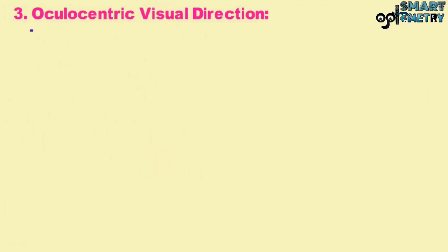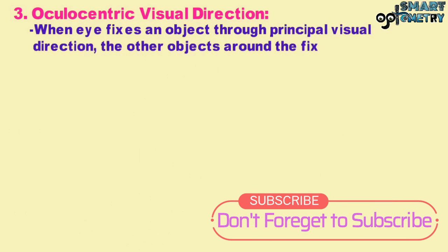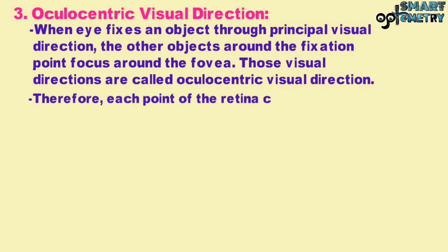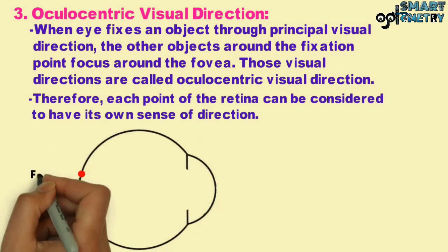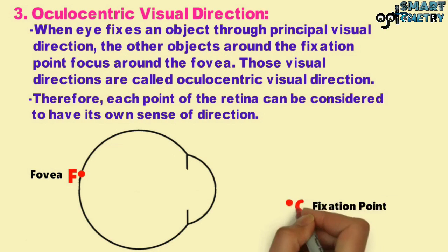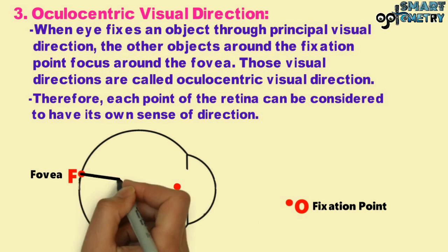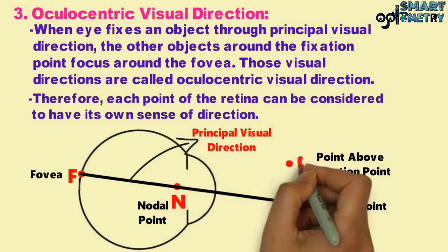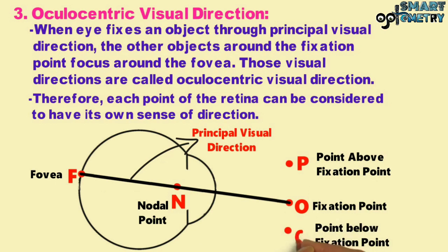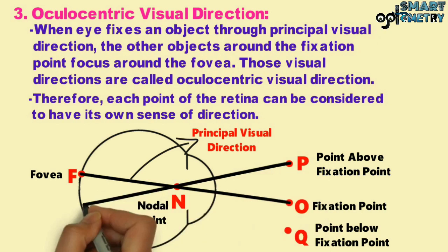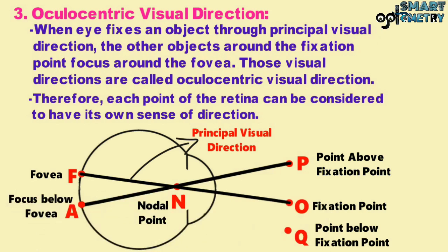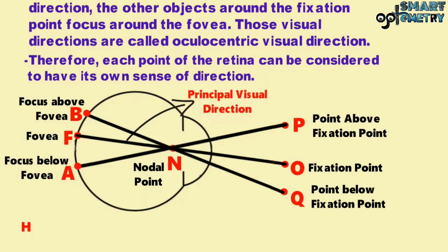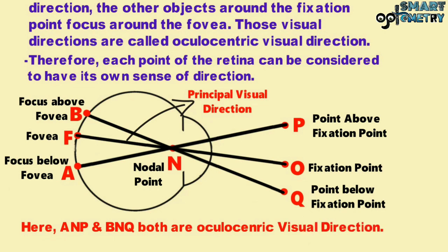Third, Oculocentric Visual Direction: when the eye fixes an object through the principal visual direction, the other objects around the fixation point focus around the fovea. Those visual directions are called oculocentric visual directions. Each point of the retina can be considered to have its own sense of direction. The point above the fixation point is P, below is Q. The line of sight from P focuses below the fovea at A, and from Q focuses above the fovea at B. The lines of sight A-P and B-Q are oculocentric visual directions.